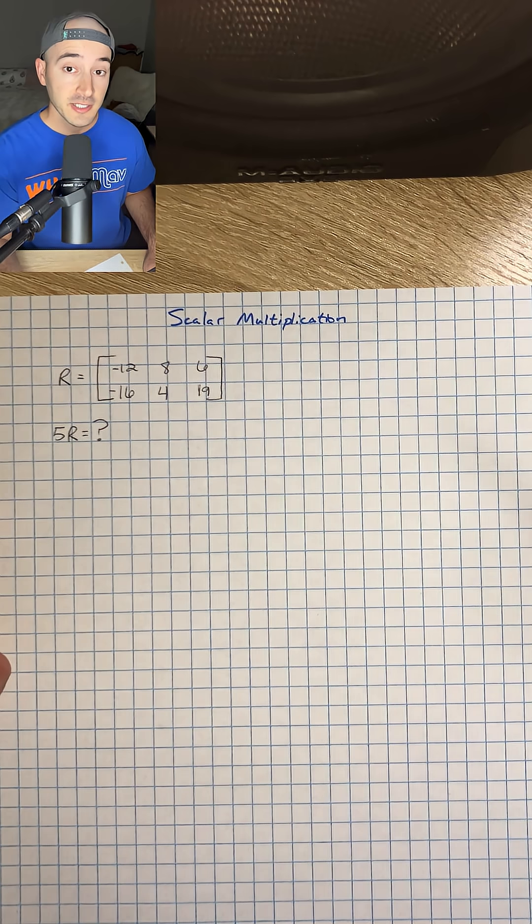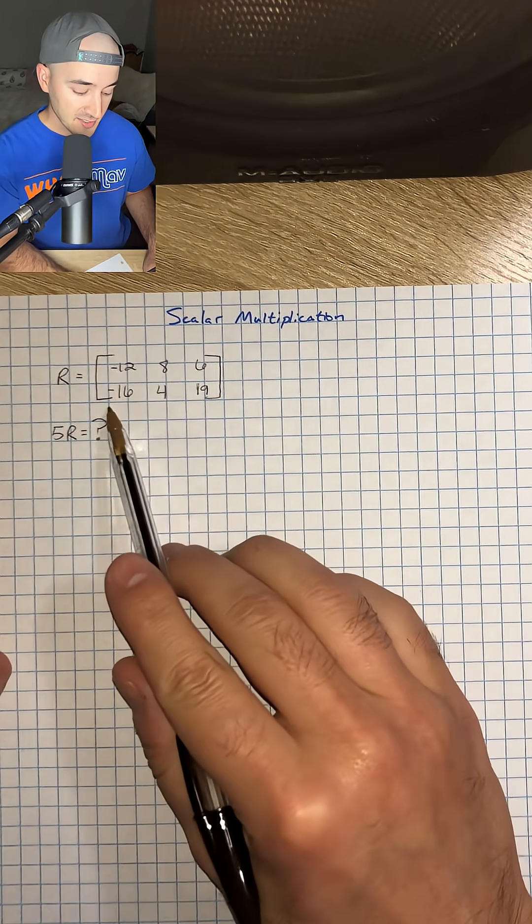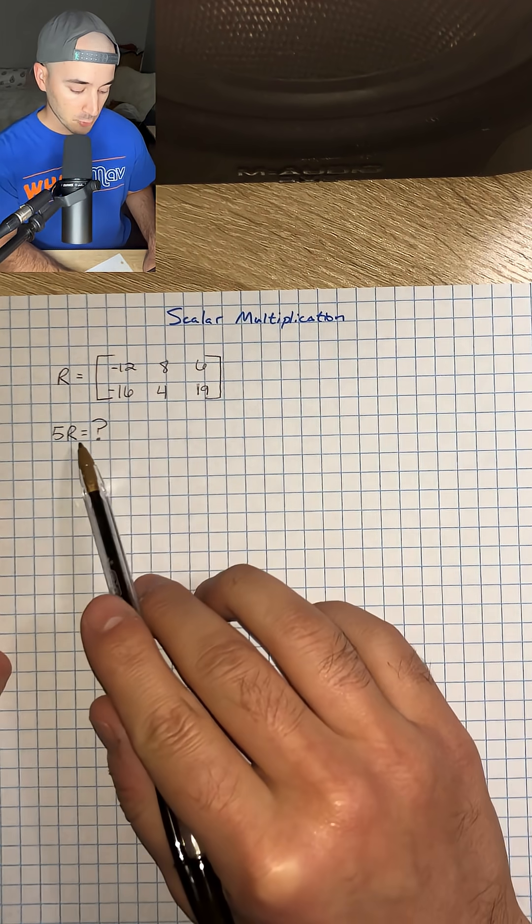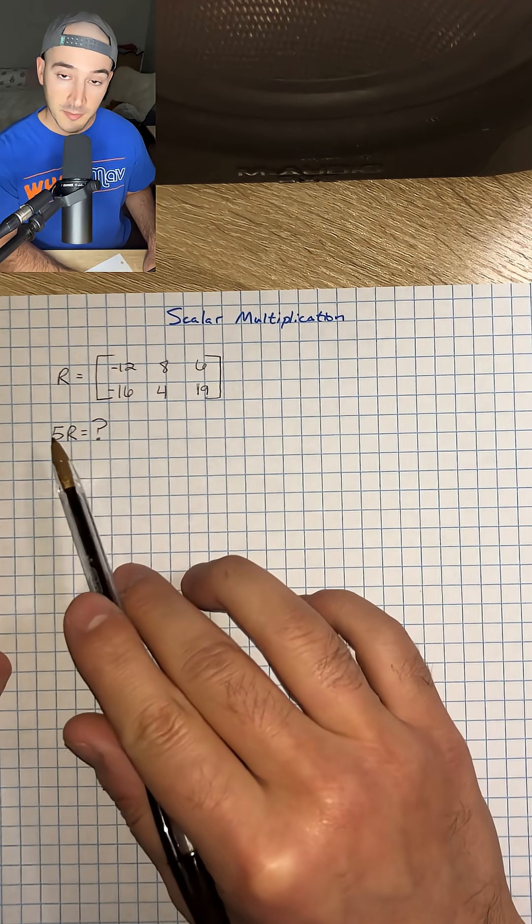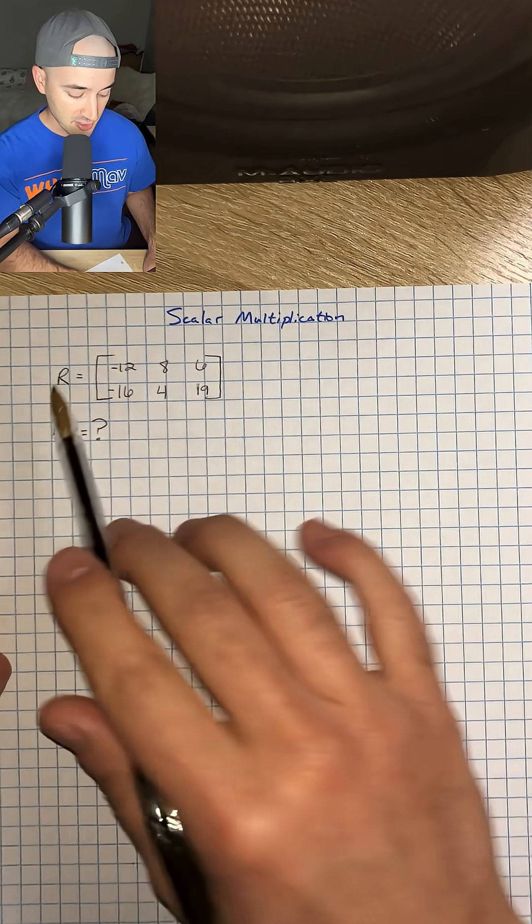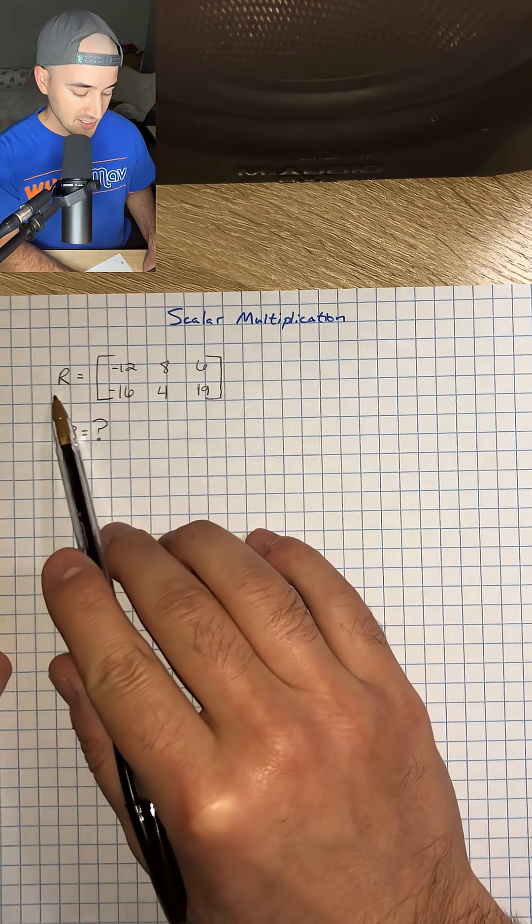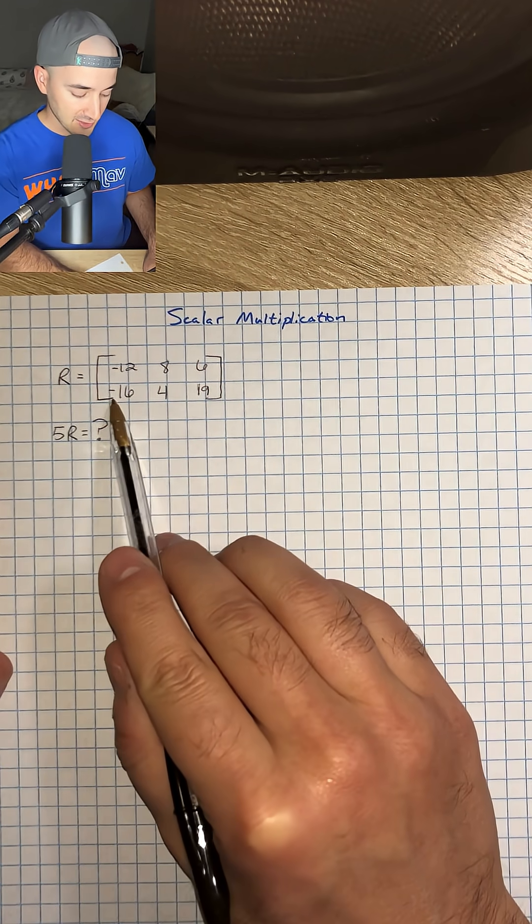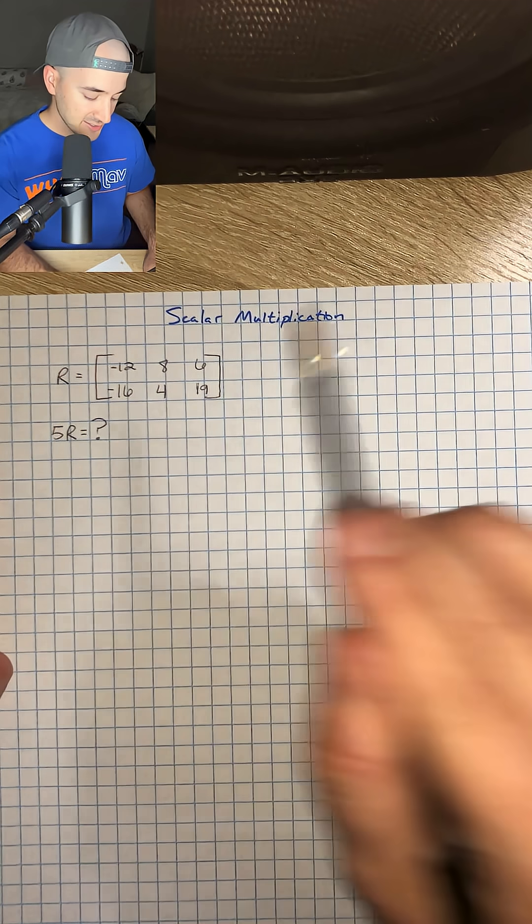Scalar multiplication just means that we're going to take a matrix and multiply by some constant number. We have r is equal to negative 12, 8, 6, negative 16, 4, and 19.